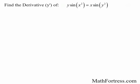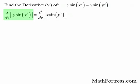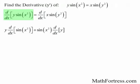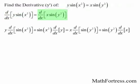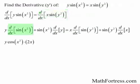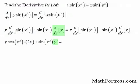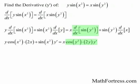Let's try the next one. Find the derivative of y times sine of x squared equals x times sine of y squared. Take a derivative of both sides — we need to apply the product rule on both sides. The product rule gives us y times the derivative of sine of x squared plus sine of x squared times y prime. The derivative of sine of x squared is cosine of x squared times 2x by the chain rule. On the other side, the derivative of sine of y squared is cosine of y squared times 2y times y prime, applying the chain rule twice. The derivative of x is just 1.